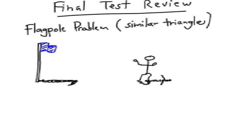This is called the flagpole problem, and it uses the idea of similar triangles and writing a proportion. Justin, who knew he was six feet tall, measured his shadow one day at a certain time and found out that his shadow was 5.5 feet long.